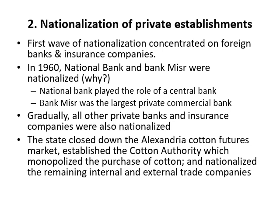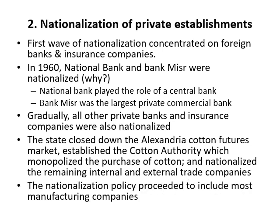The state closed down the Alexandria Cotton Futures Market, established the Cotton Authority which monopolized the purchase of cotton, and nationalized the remaining internal and external trade companies. The nationalization policies proceeded to include most of the manufacturing companies.